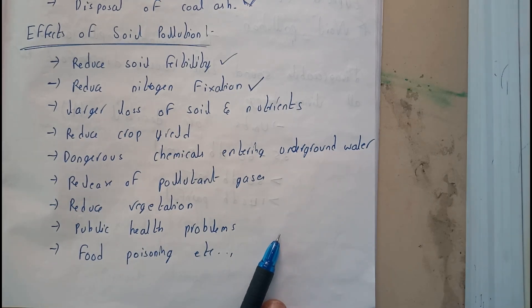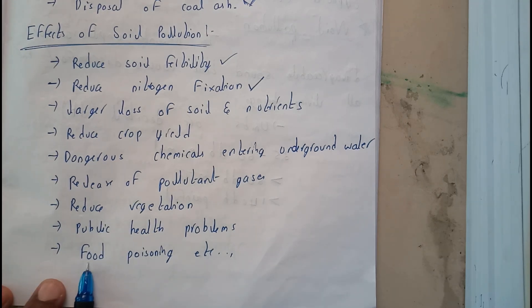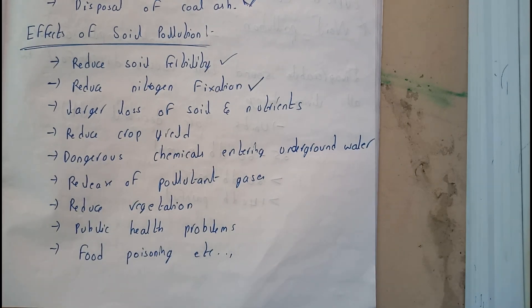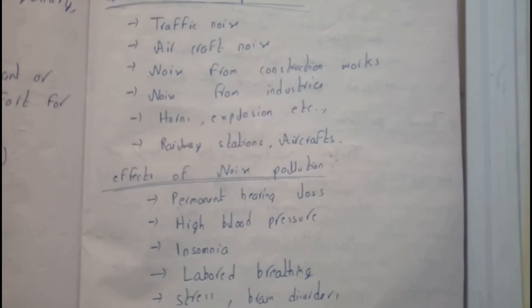You can get many kinds of diseases by eating fruits or plants grown in polluted soil. This causes food poisoning. Now let's see what steps we can take to reduce soil pollution.